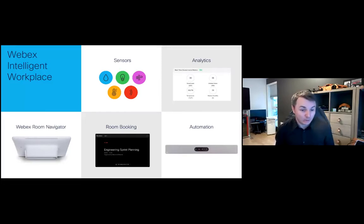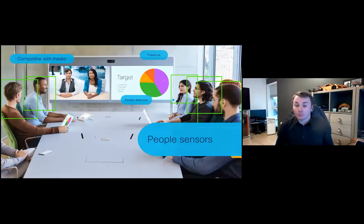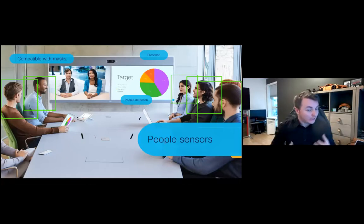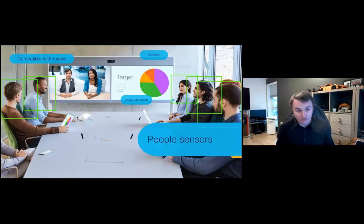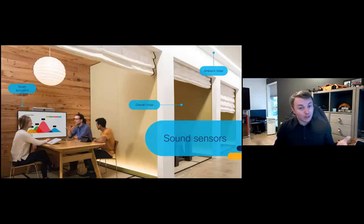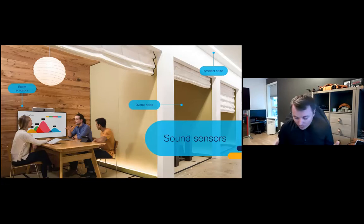We have several sensor types. For people sensors, we can detect presence through ultrasound, detect heads and bodies through the camera, and detect if someone is wearing a mask — important for COVID compatibility both for video conferencing and space utilization tracking. For sound sensors, the device's microphone can detect ambient noise levels, overall noise levels, and also test the acoustic dryness score and reverb levels.